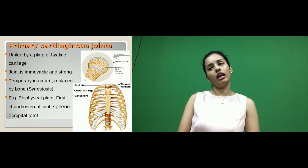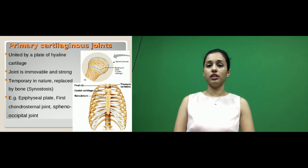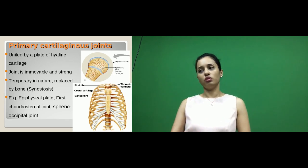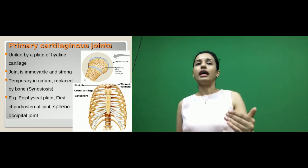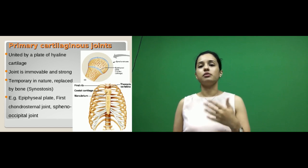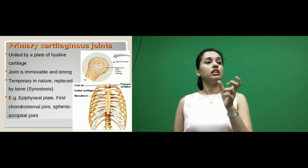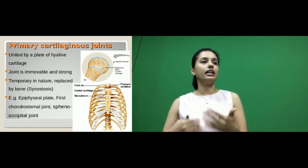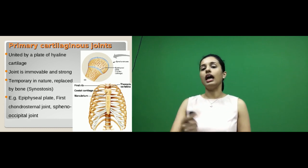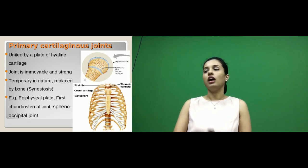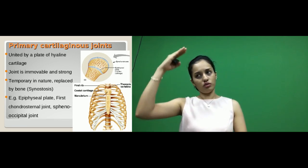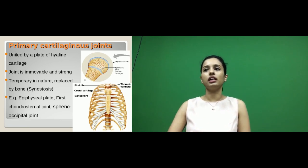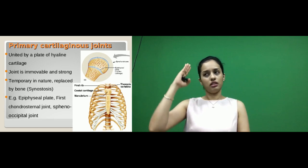Primary cartilaginous joints are very common in children and temporary in nature. They are united by a plate of hyaline cartilage. Later the hyaline cartilage undergoes ossification and is replaced by bone — a process also called synostosis. An example is the epiphyseal plate, mainly seen in children during the growing age, which helps in the lengthening of the bone and the increase in height, and is replaced by bone once puberty is attained.